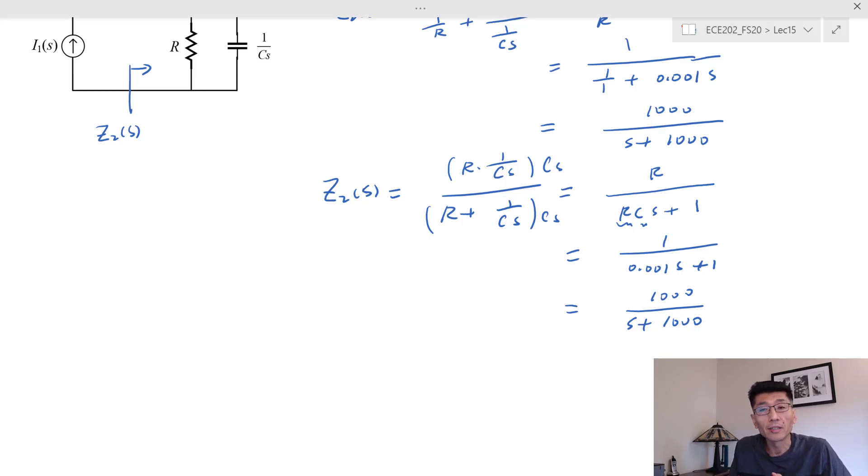Typically, just to get the driving point impedance by using the parallel-series principles. This is quite straightforward. So let's look at the two-port or the two-point network. Two-port network is a little more interesting.